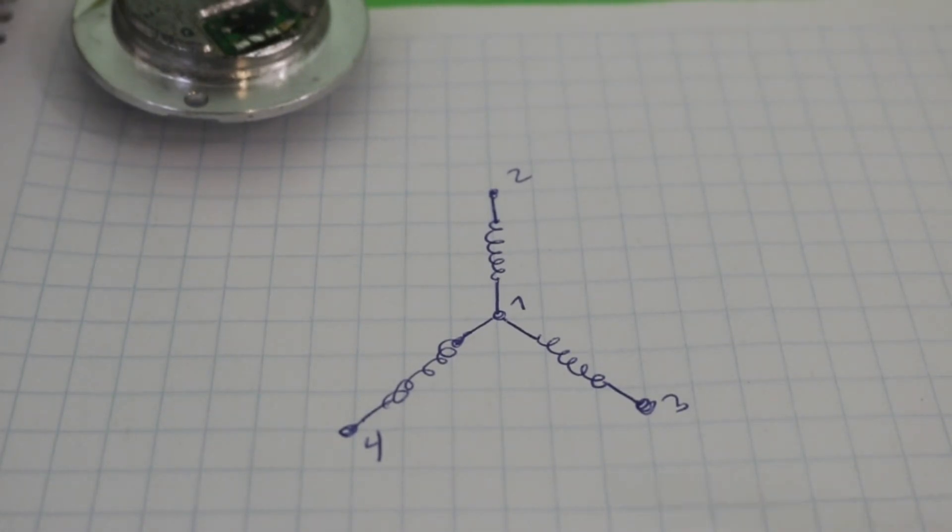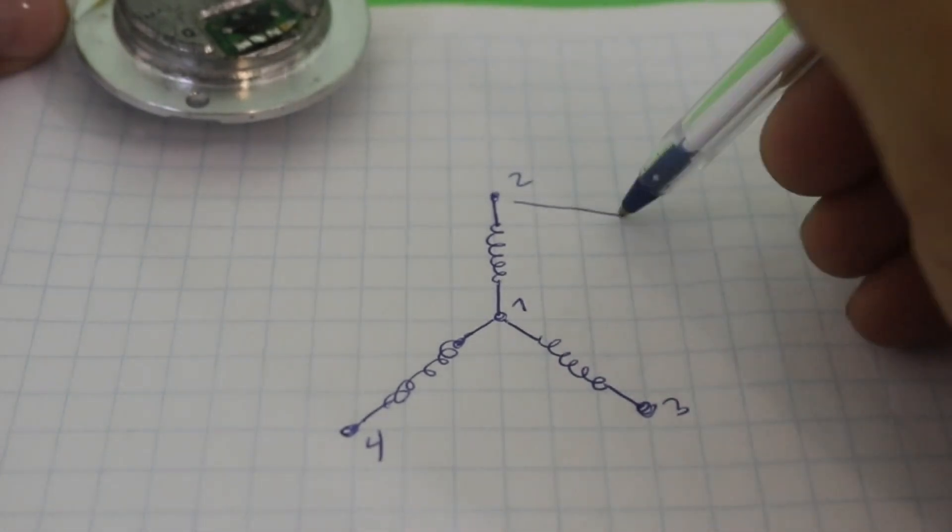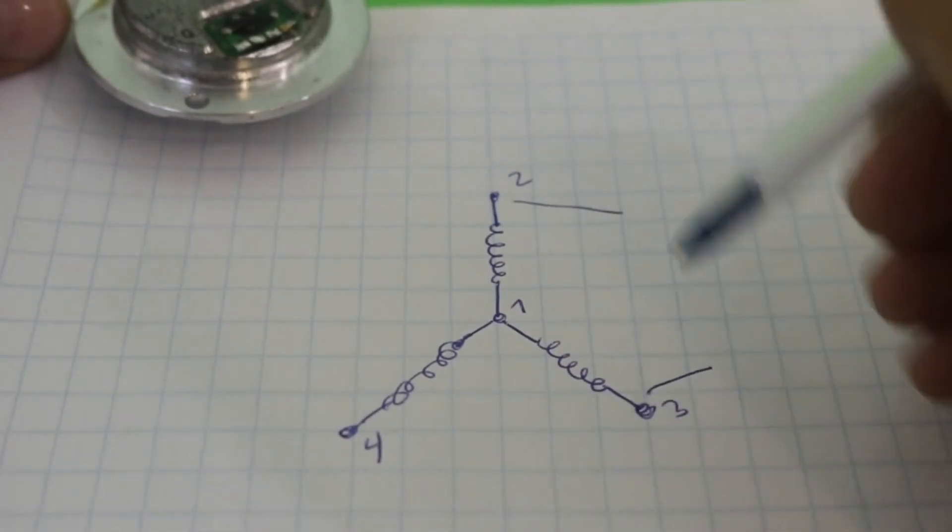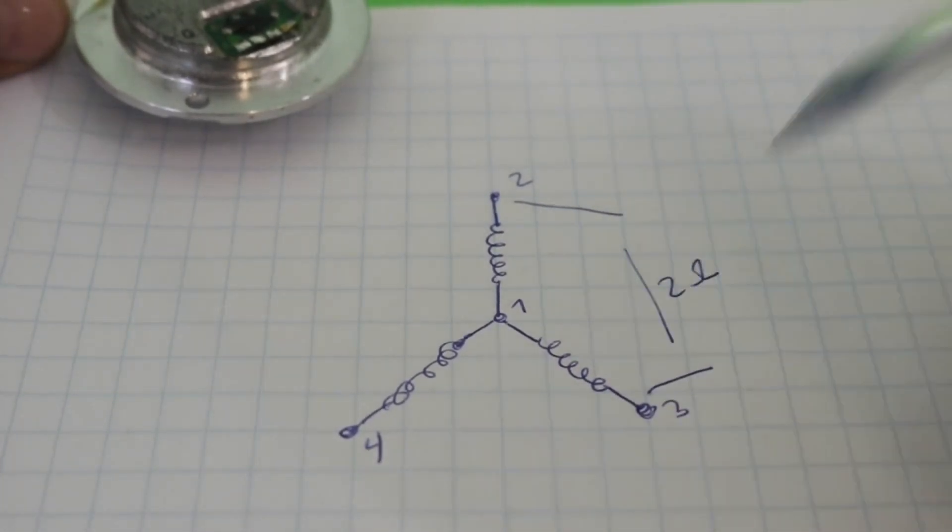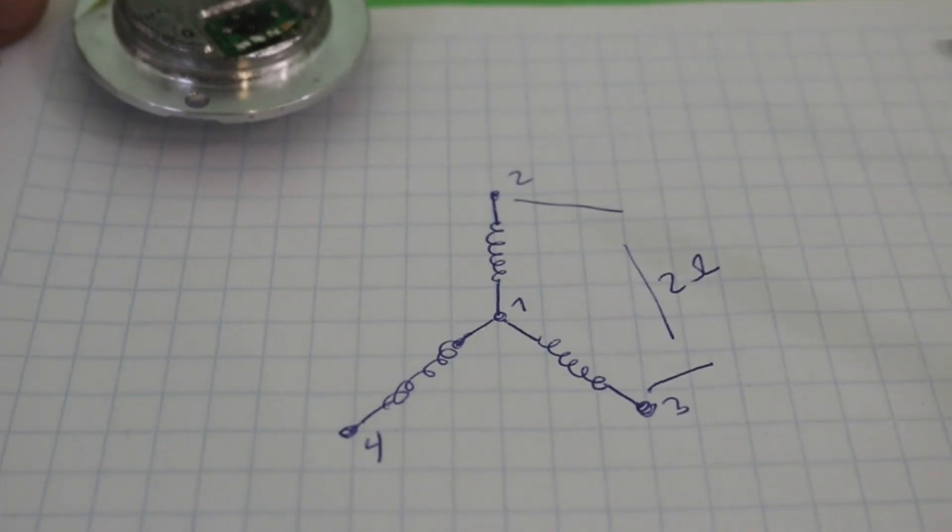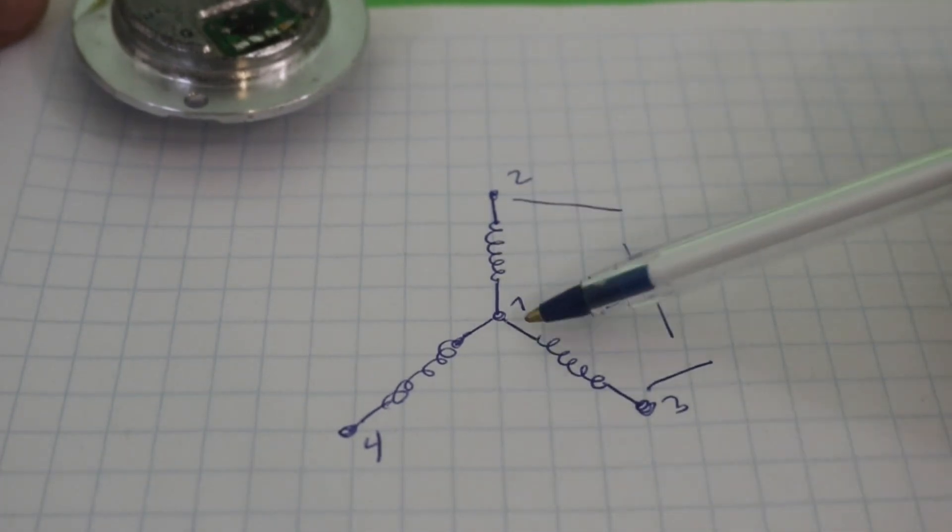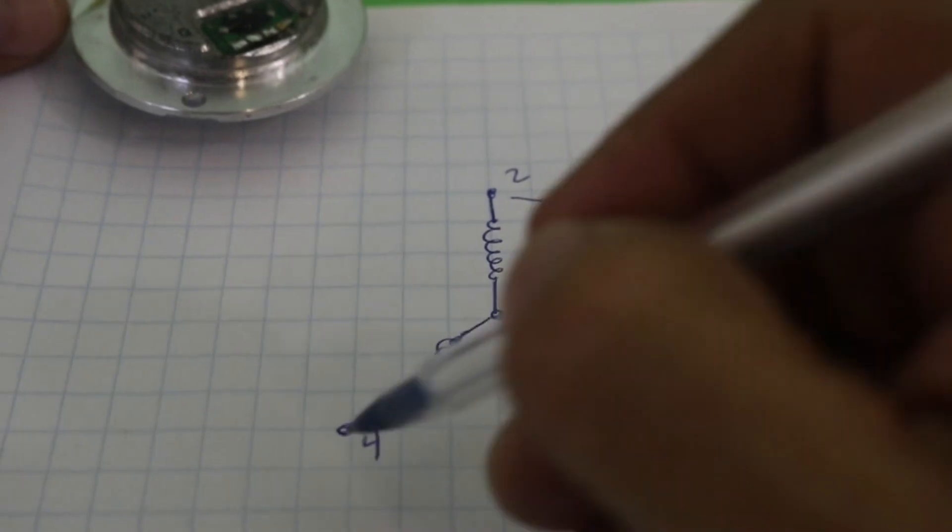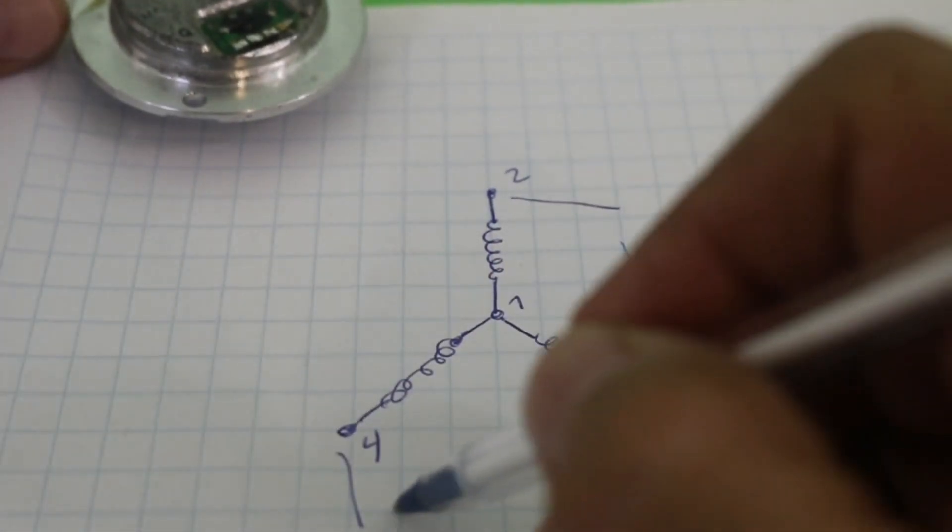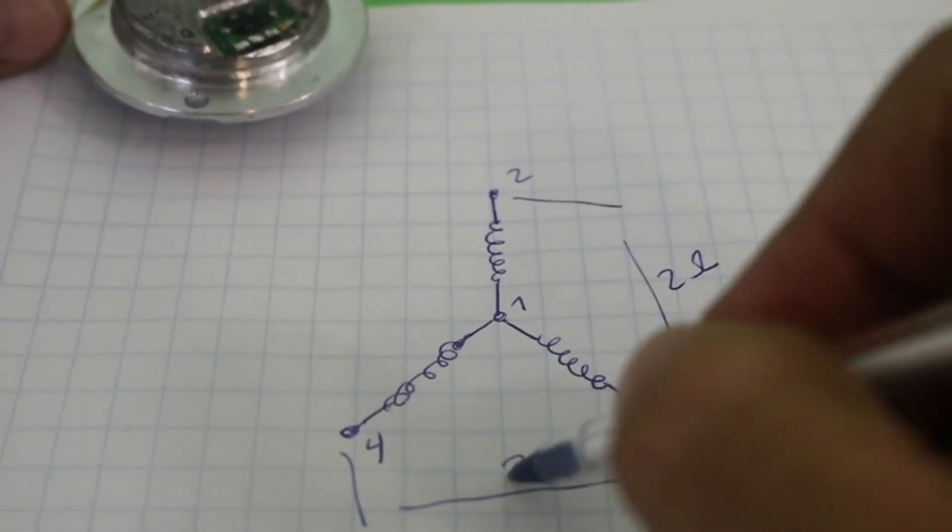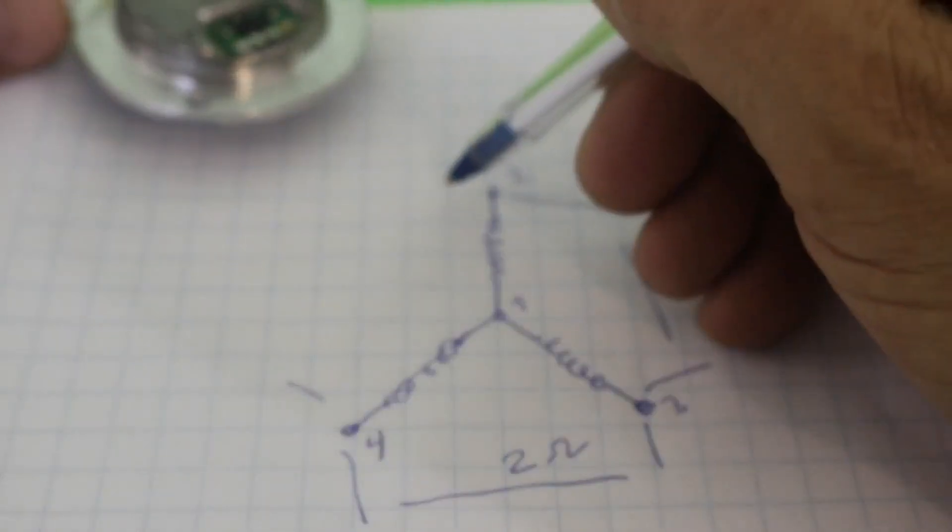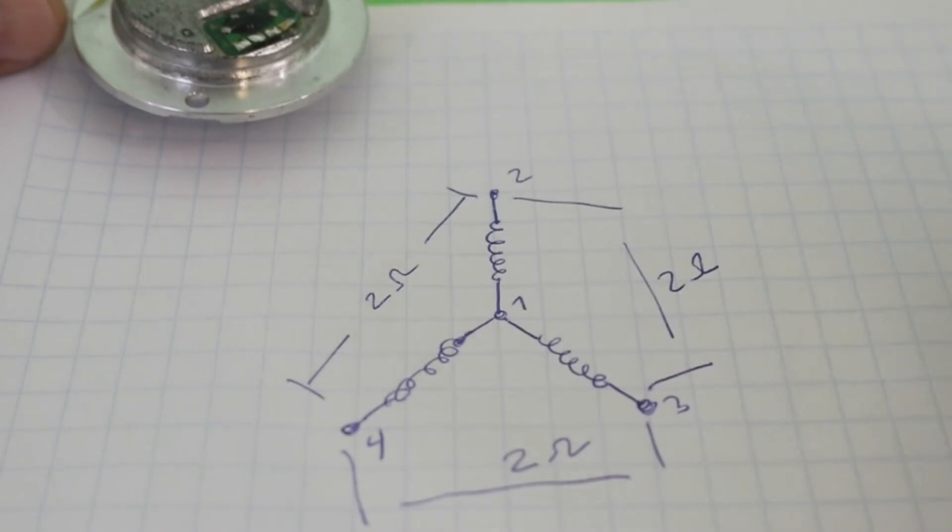However, if you check the resistance between 2 and 3, you will get double that value, 2 ohms, because you have 1 ohm here and 1 ohm here. The same for the pair 3 and 4, you will get 2 ohms. And also between 4 and 2, you get 2 ohms of resistance.